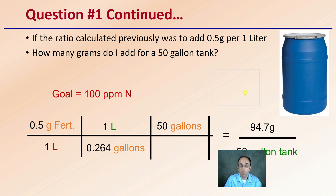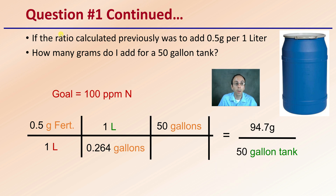Continuing to the next question: if the ratio calculated previously was 0.5 grams per liter, how many grams do I add for a 50-gallon tank? We have that ratio of 0.5 grams per liter, and we do a conversion from liters to gallons — one liter is the same as 0.264 gallons. We want to add to 50 gallons, so multiplying across the top and dividing by the bottom, we would get 94.7 grams per 50-gallon tank, which is more applicable to a reservoir a grower might be utilizing.